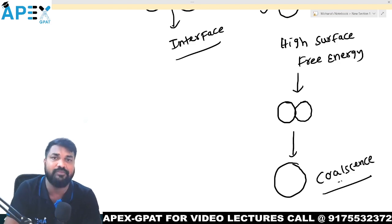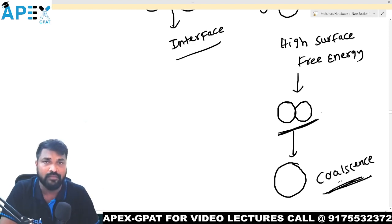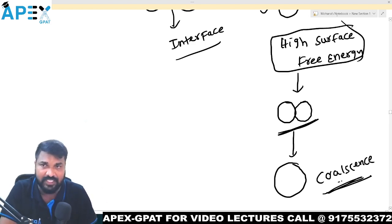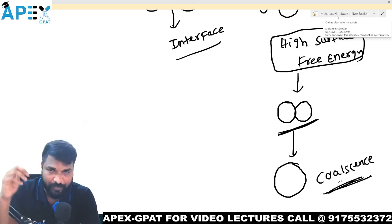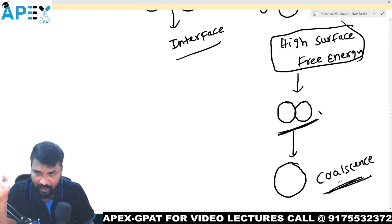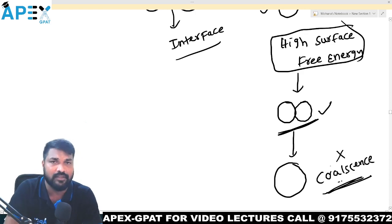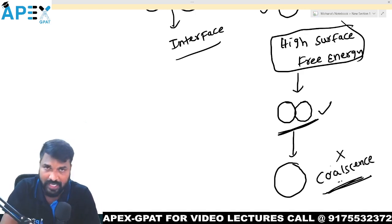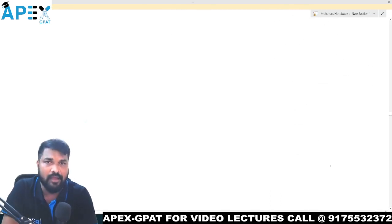If I want to make the system stable, I can decrease their surface free energy. If I decrease the free energy, they don't move. When they don't move, there is no fusion. When there is no fusion, there is no coalescence, and the system becomes stable. I can decrease the surface free energy using three approaches.